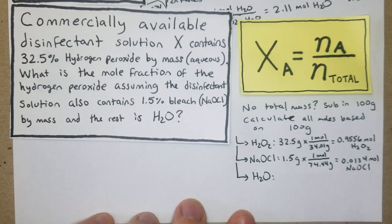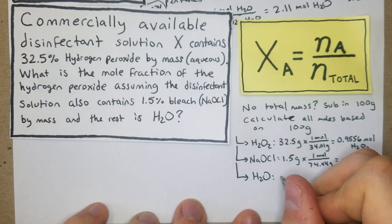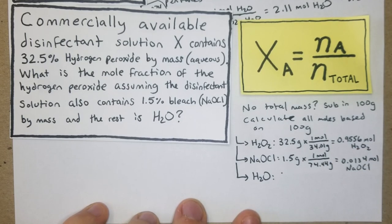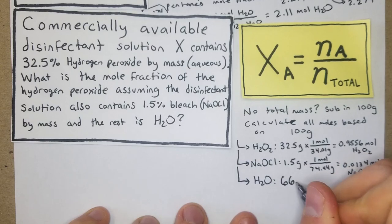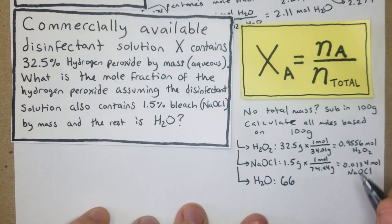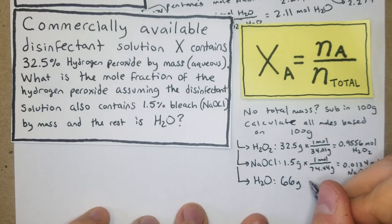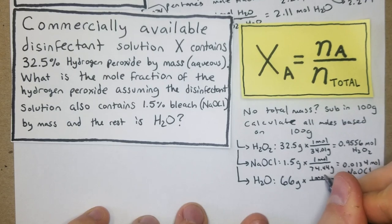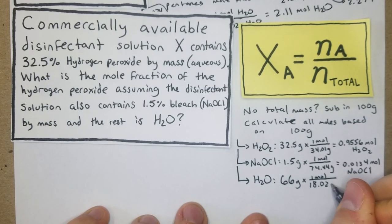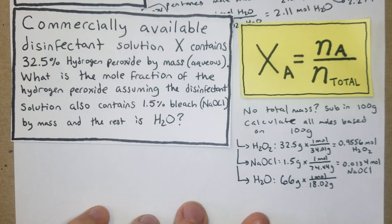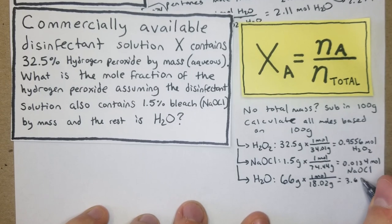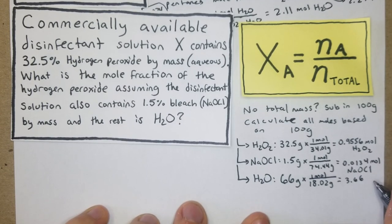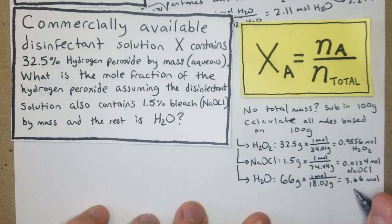Lastly, we're going to have our water, which is going to be the remainder. So we have 32.5 plus 1.5 equals 34, minus 100 gives us 66 grams of water. That's going to be times 1 mole per 18.02 grams. So we have 66 divided by 18.02, which is 3.66 mole of H2O.